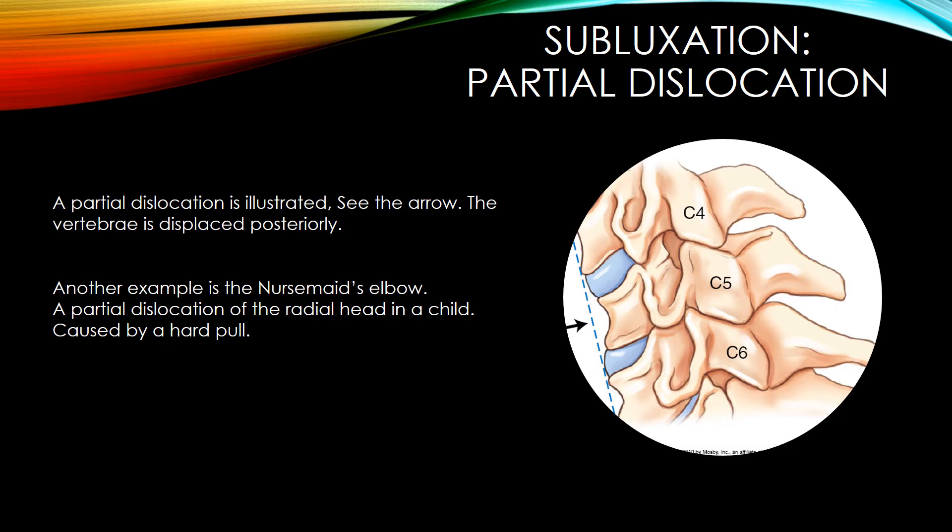Subluxation is a partial dislocation. A partial dislocation is illustrated — see the arrow — where the vertebra is displaced posteriorly. Another example is the nursemaid's elbow, a partial dislocation of the radial head in a child caused by a hard pull on the arm.